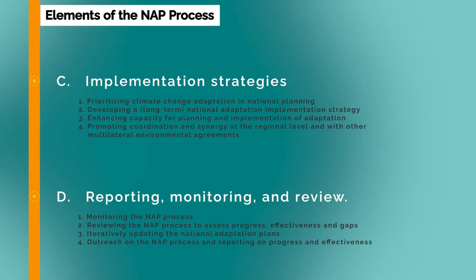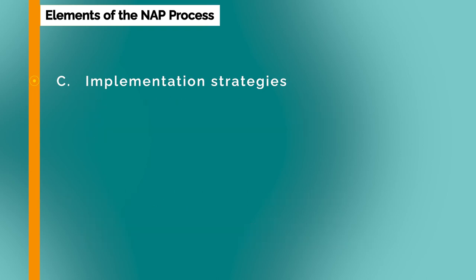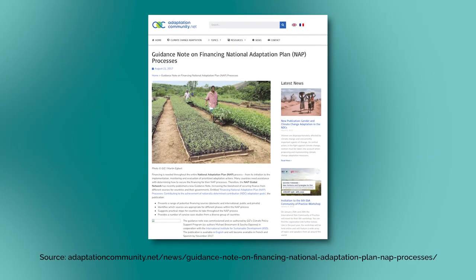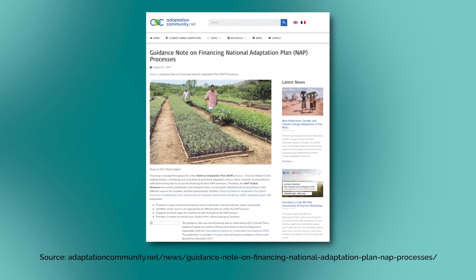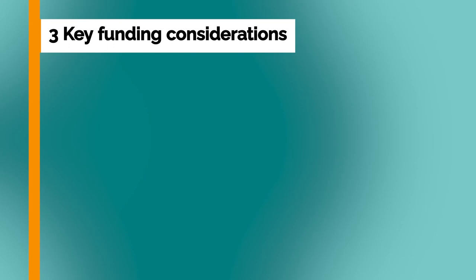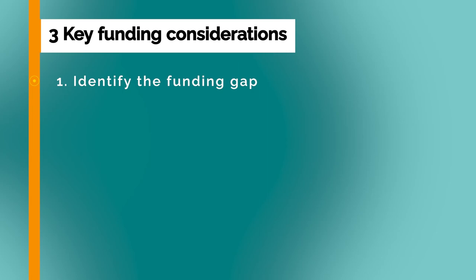Now let's briefly look at the remaining elements of the NAP process, C and D. A key component of element C, implementation strategies, is developing a finance strategy. Funding will be required throughout the NAP process, from the launch of the NAP to the implementation, monitoring, and evaluation of priority adaptation measures. The NAP Global Network Guidance Note on financing the National Adaptation Program process identifies three key considerations in accessing funding: first, identify the funding gap during the planning and development phase to determine the funds required to cover future operating and investment costs, covering the full costs from development and implementation stages to the monitoring and evaluation stage.